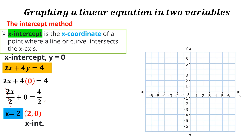We can now plot (2, 0) on the Cartesian plane. The point (2, 0) is located at a horizontal distance of 2 units. The point is there, and we name it (2, 0). So we are plotting the x-intercept (2, 0).